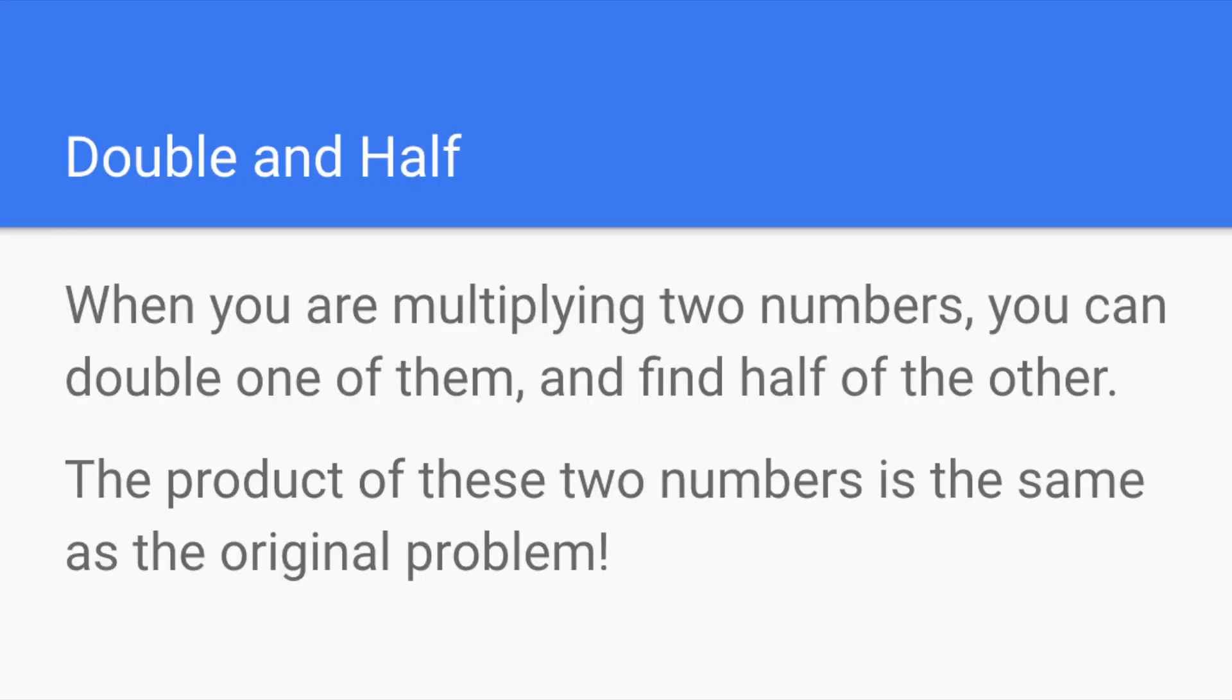Basically, the rule is this. When you are multiplying two numbers, you can double one of them and find half of the other. The product of these two numbers is the same as the original problem.